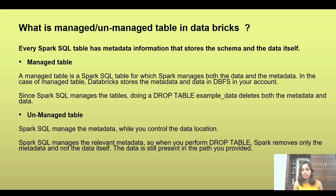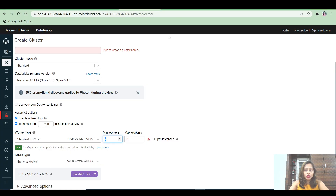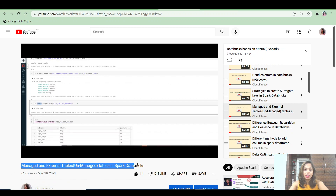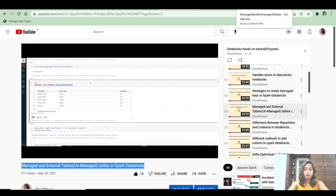With an unmanaged table, if you drop the table, Spark will remove the metadata because it knows where it is, but it has no control over the data files you stored. Those files will remain at the location you provided, and you'll need to remove them manually. This is the key difference between managed and unmanaged tables. I've also created a dedicated video on this topic in the Databricks hands-on tutorial channel.